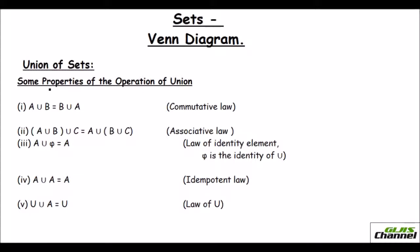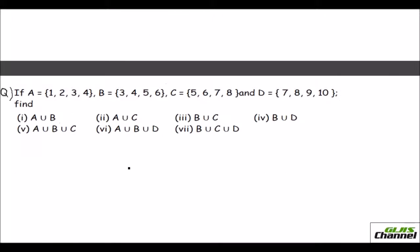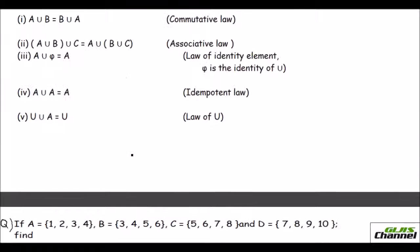Right now you might be confused, but I can explain this with an example. We have four sets: set A is {1, 2, 3, 4}, set B is {3, 4, 5, 6}, set C is {5, 6, 7, 8}, and D is {7, 8, 9, 10}. I'll use these sets to explain the properties.